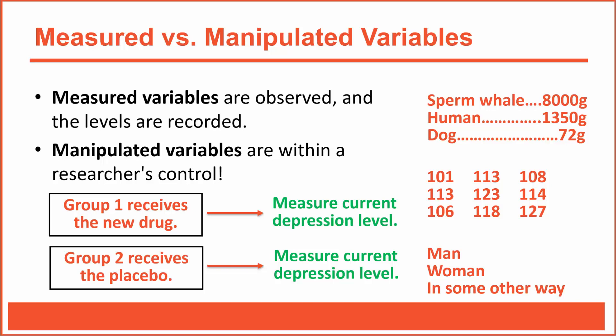It's worth noting that some variables cannot be manipulated. Can we manipulate brain weight? Can we assign some species to have a large, heavy brain and others a small, lightweight brain? No, we can't—that's a variable that can only be measured. What about gender? Can we manipulate it in a research study? Even though some people transition between genders, it's not something we, as researchers, can assign people to do. It wouldn't be practical or ethical. Not all variables are good candidates for manipulation in a research study.